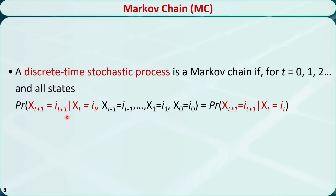The left-hand side represents the probability that at time t plus 1, the state is i_{t+1}, given that at time 0 the state is i_0, at time 1 the state is i_1, and at time t the state is i_t. The right-hand side is also a conditional probability — it represents the probability that at time t plus 1, the state is i_{t+1}, given that at time t the state is i_t.